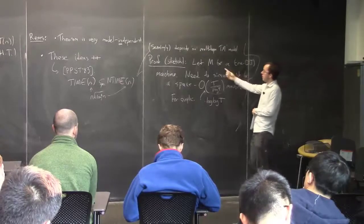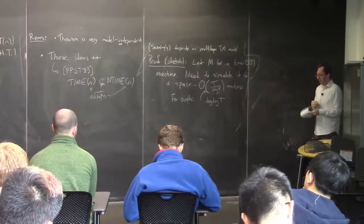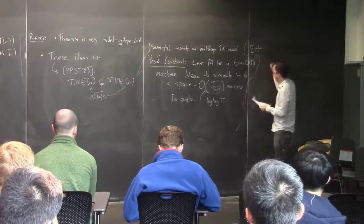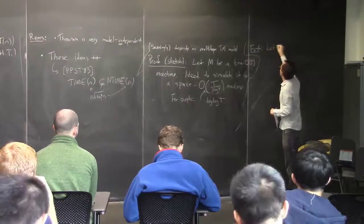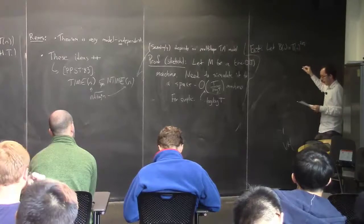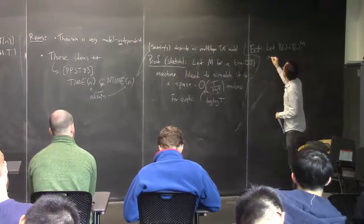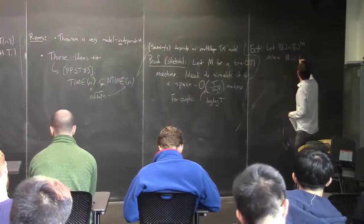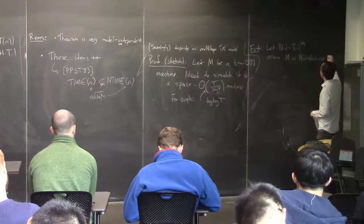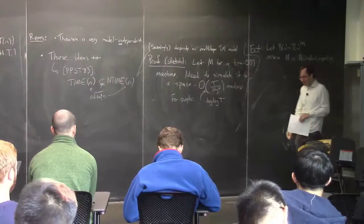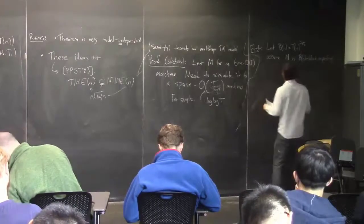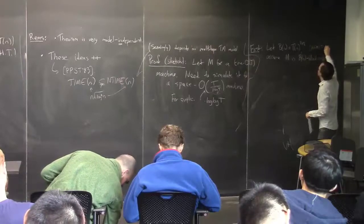The first thing I'm going to do in this simulation of M is clean it up, à la homework 1 problem 2. Let B(n) = T(n)^(2/3), and assume that M is B(n)-block-respecting. I'll remind you what that means — hopefully you don't need a reminder, but maybe you were so keen to turn in the homework on Saturday that you've now forgotten.